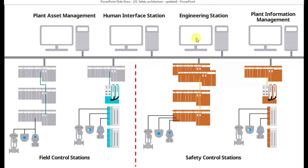The engineering station is where plant automation engineers and instrumentation engineers responsible for the particular plant do their engineering functions — building the logics, and sometimes it may be required to change the logics or bypass the logics for operating equipment. The engineering station is used by engineers, maintenance engineers, maintenance supervisors, and technicians for engineering activities.